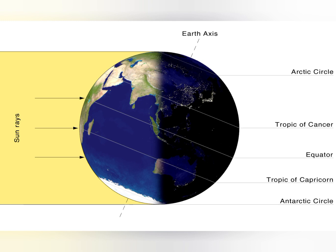By 21st and 22nd of December, the earth's position has turned such that the north pole is pointed away from the sun and directed towards the pole star. It is the southern hemisphere that now receives direct rays of the sun, with vertical rays falling at the Tropic of Capricorn. The southern hemisphere is now experiencing summer, while the northern hemisphere receives oblique or slanting rays, experiencing winter — this is called the winter solstice.